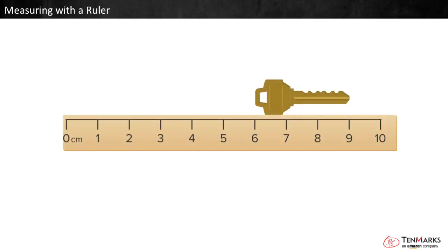Let's look at one more example. Find the length of the key. One end of the key lines up with six. The other lines up with nine. Use subtraction to find the length. Nine minus six equals three. The key is three centimeters long.